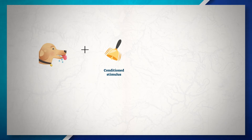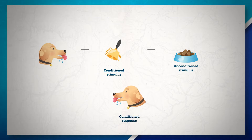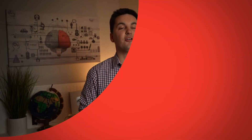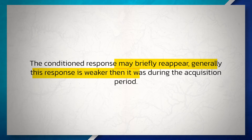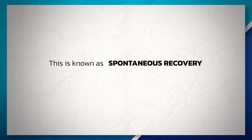Eventually, if the conditioned stimulus is repeatedly presented without the unconditioned stimulus, the association between the two will weaken and the conditioned response will diminish and eventually disappear — this is known as extinction. After extinction occurs, if there is a delay and the conditioned stimulus is presented again, the conditioned response may briefly reappear. Generally, this response is weaker than it was during acquisition, and if this happens, it is known as spontaneous recovery.